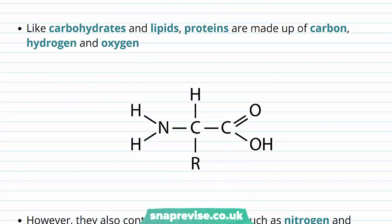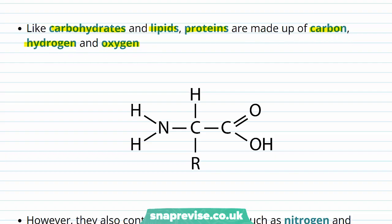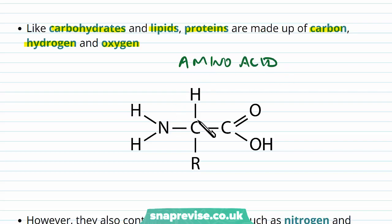Chemically speaking, like carbohydrates and lipids, proteins are made up of the elements carbon, hydrogen, and oxygen. Here we have one amino acid, which is the building block of a protein, and you can see we have carbon, oxygen, and hydrogen just like the other two families of molecules.